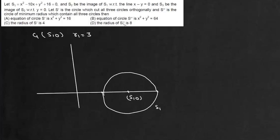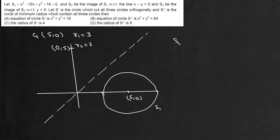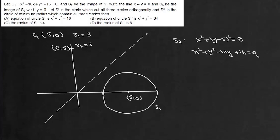S2 is the image of the circle with respect to the line y equals x. What y equals x does is interchange x and y, so in this case the center will be at (0, 5) and the radius will still be 3. So the equation of S2 will be x² + (y − 5)² = 9, which is x² + y² − 10y + 16 = 0.